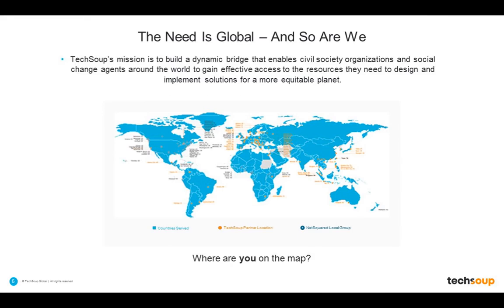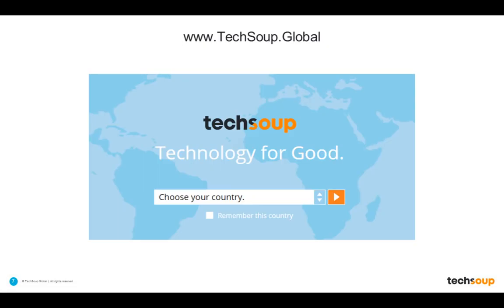A little bit about TechSoup: we are working to build a dynamic bridge to help connect civil society organizations to the resources they need to create a more equitable planet. Go ahead and chat in to let us know from where you are joining us. We have around almost 300 people in the room right now. If you are joining us from outside the United States, we recommend visiting TechSoup.Global and selecting your country from the drop-down so that you are getting donations for your region or country. The donation programs we will talk about later are specifically through TechSoup.org, targeting U.S.-based nonprofits and libraries.